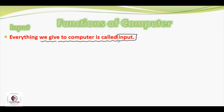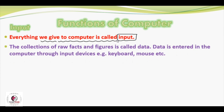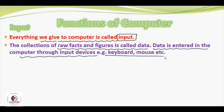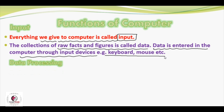Now let's define input: everything that we can give to the computer is called input. The collection of raw facts and figures is called data. Data is entered in the computer through input devices, for example keyboard, mouse, etc. The second function of the computer is data processing, which plays a backbone role when converting data into information.